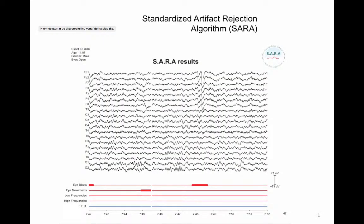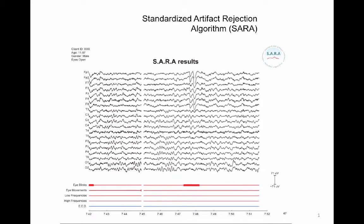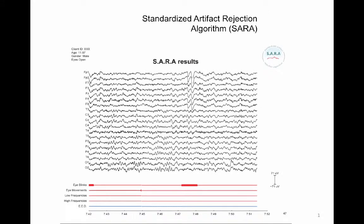SARA has a sophisticated algorithm to prevent the generation of artifacts as a result of removing segments of EEG data. These artifacts are also known as splicing artifacts. SARA uses an algorithm similar to the zero-crossing method in order to make sure the EEG preceding the artifact and the EEG following the artifact are joined together as seamlessly as possible.